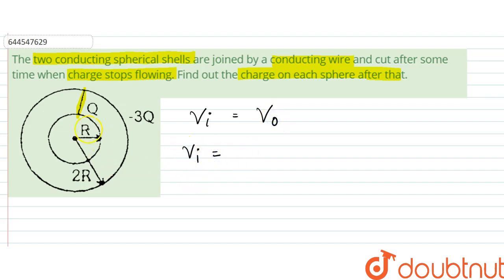So inner shell's potential would be due to, let us say that x amount of charge is flowing, so the left over would be Q minus x here, and here we would have minus 3Q plus x. So due to that, the potential would be equal to k(Q - x)/R plus due to the outer charges there would be a potential that is k(-3Q + x)/2R.